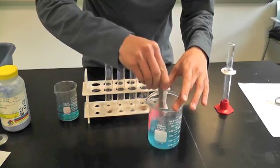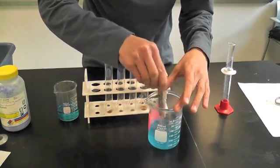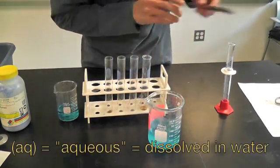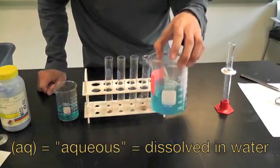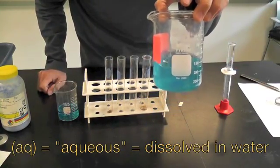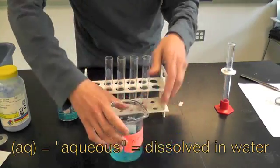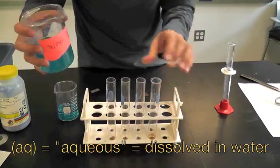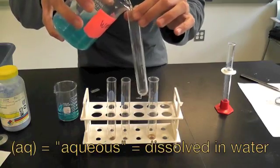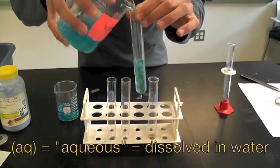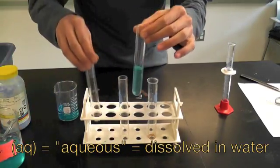As with many single replacement reactions, you have some solid metal, some elemental metal with some ionic compound in aqueous solution, AQ. That just means it's dissolved in water. So we'll take this copper nitrate solution and put it in a test tube. You don't need too much.